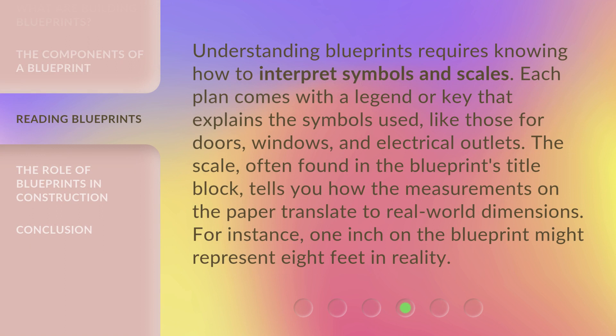Understanding blueprints requires knowing how to interpret symbols and scales. Each plan comes with a legend or key that explains the symbols used, like those for doors, windows, and electrical outlets. The scale, often found in the blueprint's title block, tells you how the measurements on the paper translate to real-world dimensions. For instance, one inch on the blueprint might represent eight feet in reality.